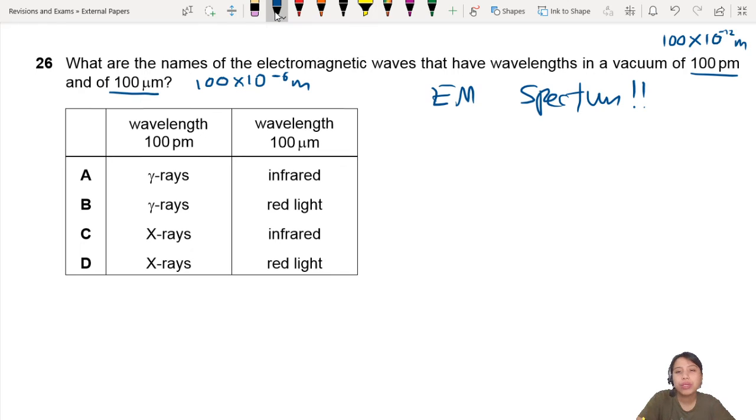So if you simplify it down to standard form, it would be 1 times 10 to the negative 4 meters. And this one will simplify to 1 times 10 to the negative 10 meters. Then maybe you memorize it in this form. It will be more familiar to you.